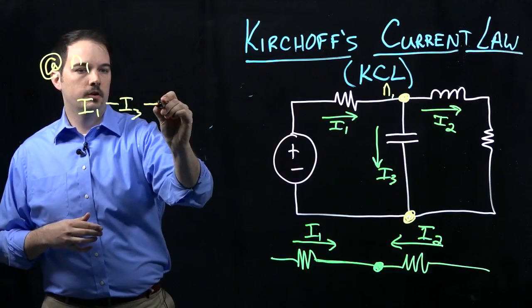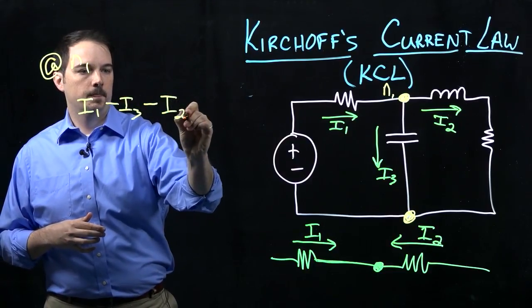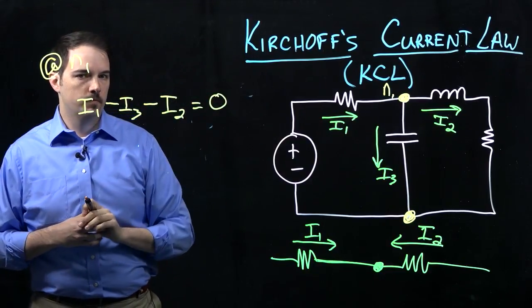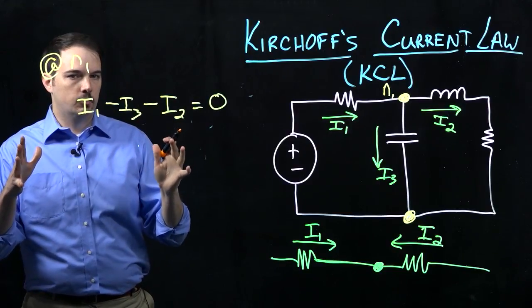And then I2 is leaving the node, minus I2. Again, all those have to be equal to zero. So what can we learn from this equation? A couple things.